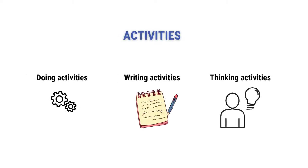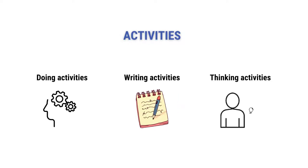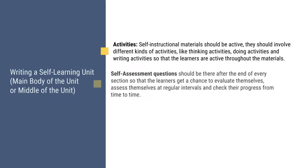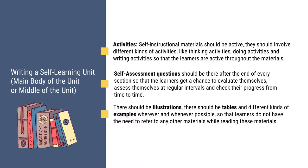Now let us see what kind of activities the learners are supposed to do during the study of the self-learning materials. The activities could be doing activities — what they are expected to do. Then there could be writing activities — what they are expected to write while reading the unit or after reading the unit. And the last part is thinking activities: what kind of activities can prompt them to think, meaning these activities should help them think properly and they should be able to remain active throughout reading the unit.